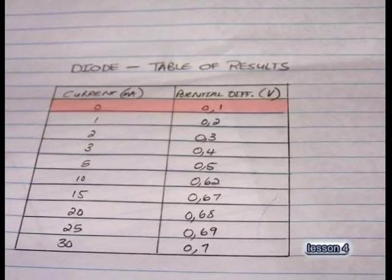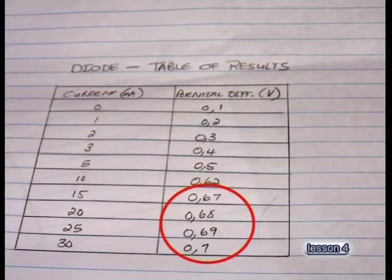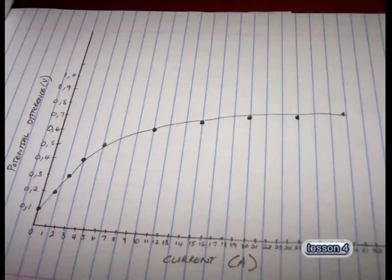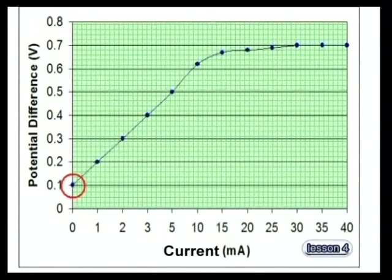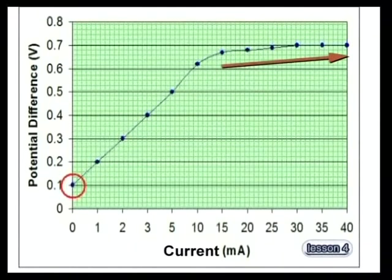The learners have collected their readings of the current passing through the circuit and the potential difference across the diode. This diode definitely doesn't obey Ohm's law. Even when the current was zero, we noticed that the voltmeter reading was 0.1 volt. And when we increased the current, the voltmeter reading increased for a while but then reached a constant value. So when we graph these readings, we get a curve that does not pass through the origin. There is a potential difference across the diode before the current passes through it, but as the current increases, the potential difference does not increase proportionally. The gradient of the curve changes, which means that the resistance of the diode changes too.